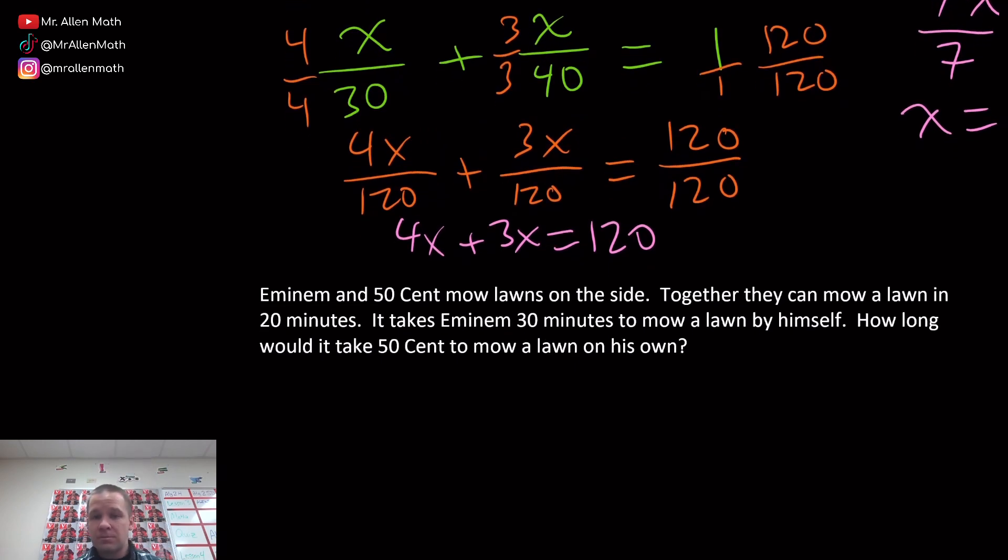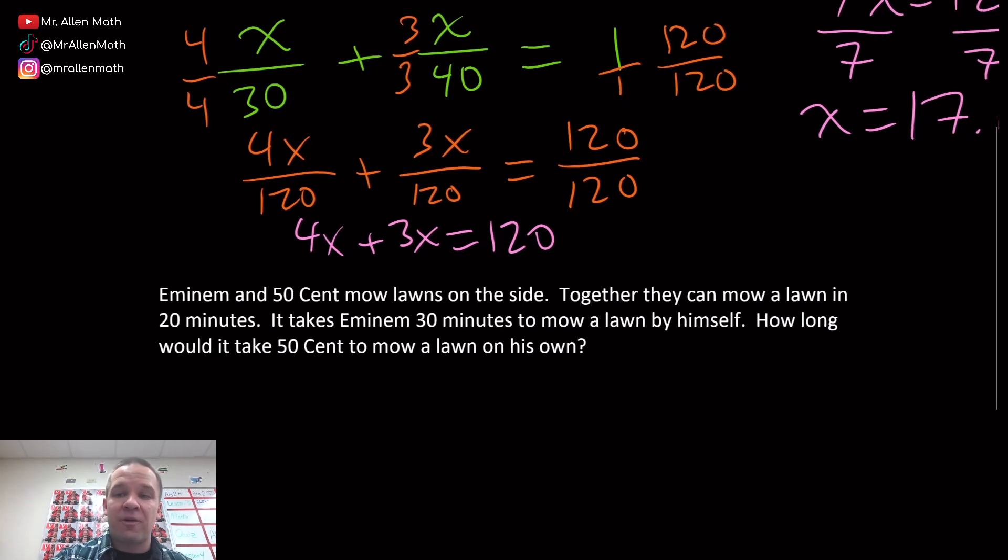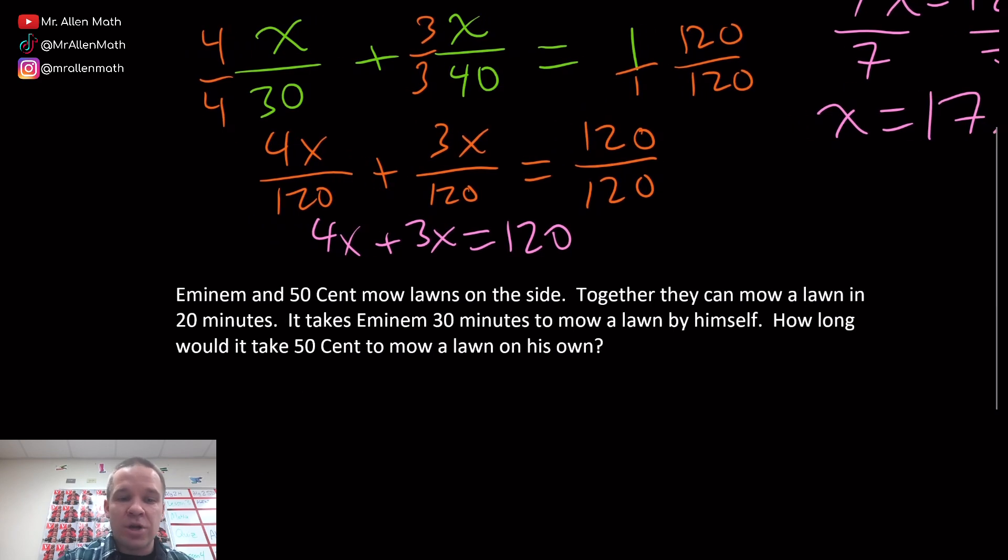So if we look at our old equation here, now we know how long it takes them to do these things. We got 20 minutes when they do it together. Now when we solve for X in this one, that was our numerator. So right now we know the 20 up in the numerator because that's how long it takes for them to do it together, and we want to see how long it takes to complete that full job, which is why we have it equal to one. Now Eminem takes 30 minutes to mow the lawn, 30 minutes to complete the job. But we don't know how long it takes for 50 Cent to mow that lawn. So we can represent that with our variable, our unknown X, and we'll solve for that one.